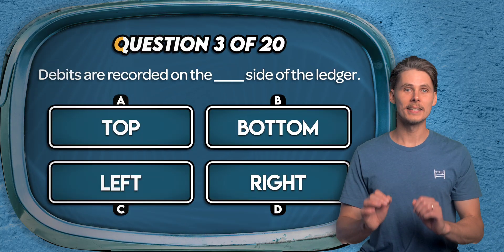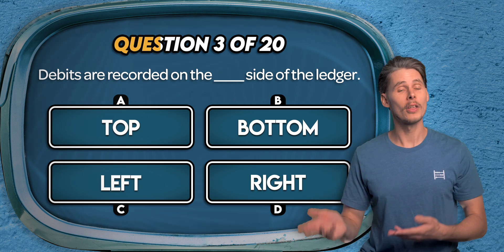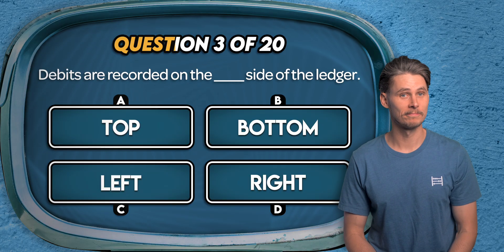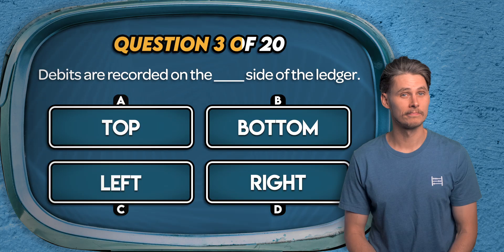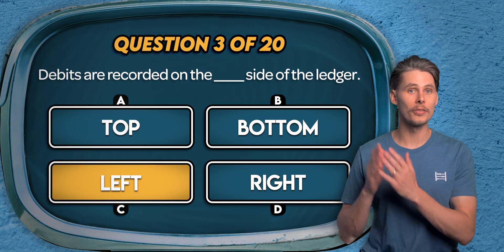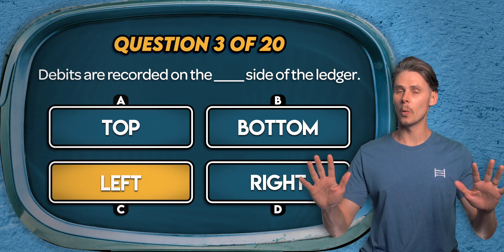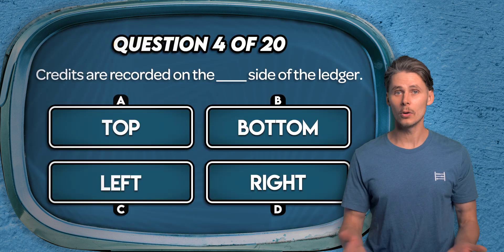Question 3. Debits are recorded on which side of the ledger? The top, the bottom, the left, or the right? The answer is C. Debits are always recorded on the left side of the T account. This format is used worldwide to avoid confusion.